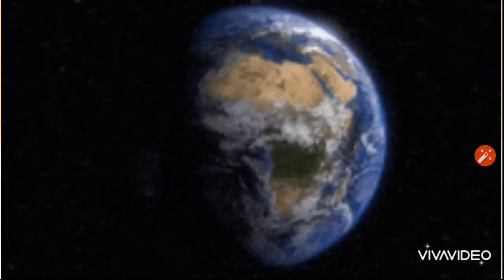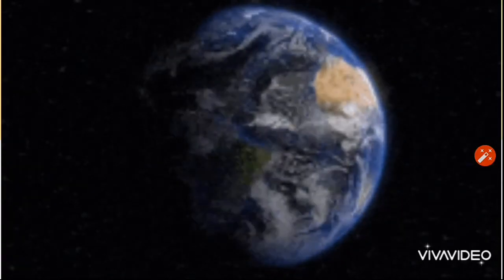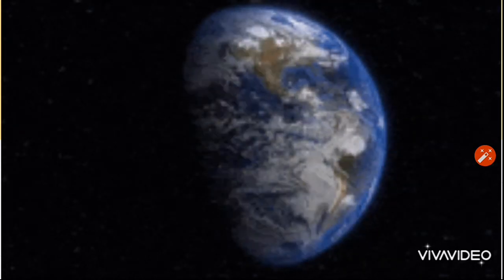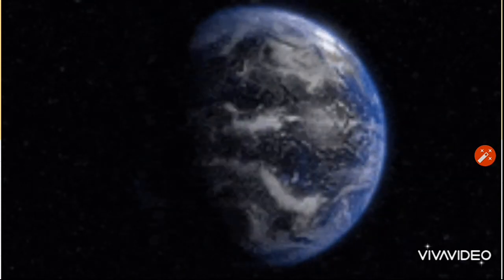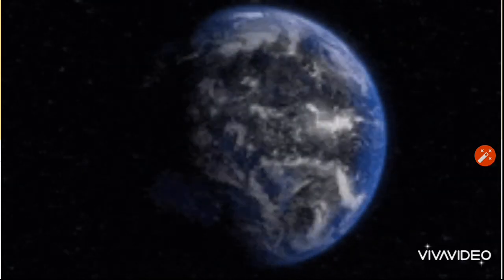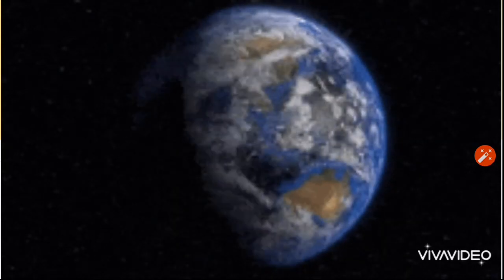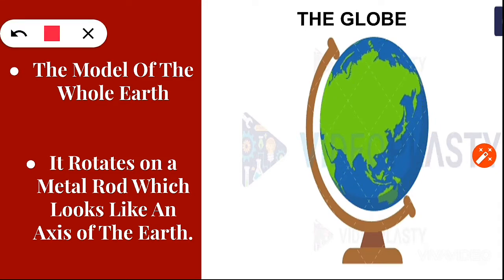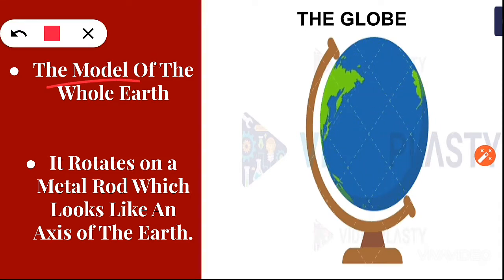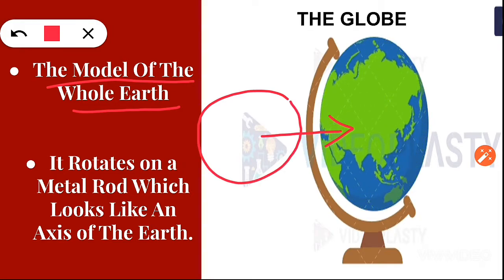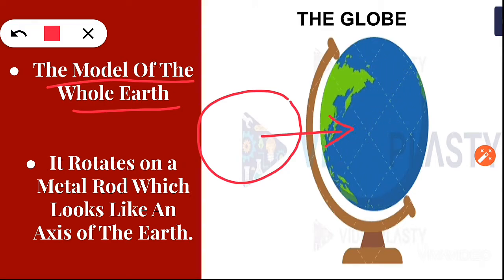The name of the chapter is the way the earth looks. As we all know, our earth is very vast, it is very big, thus it is not possible for us to see the entire earth at a time. Does anybody can tell me then how do we study the earth? Yes, it is with the help of a globe. A globe is a model of the whole earth. You can see the entire earth on the globe. As you can see on the screen, it rotates on the metal rod which looks like an axis of the earth.